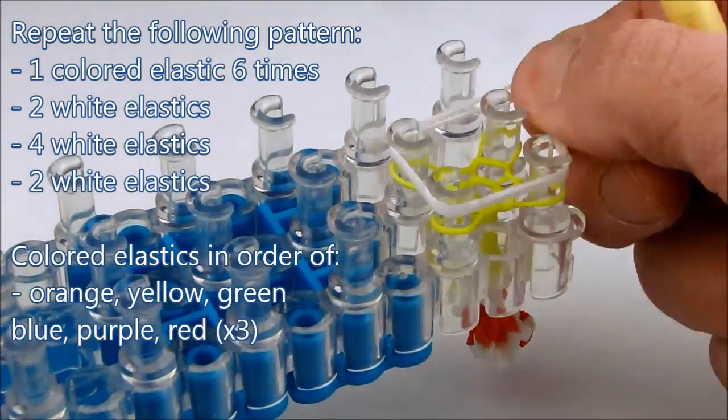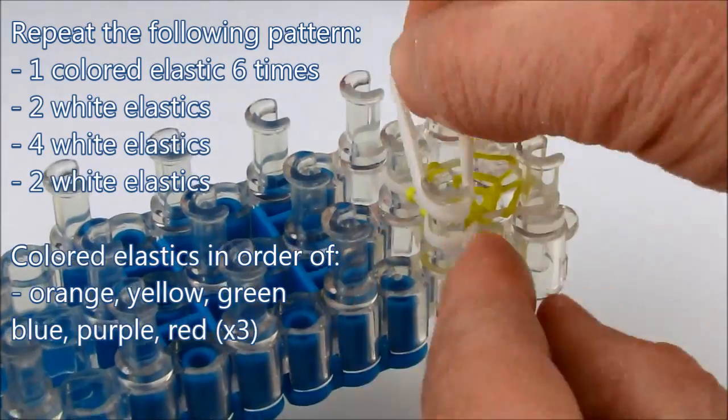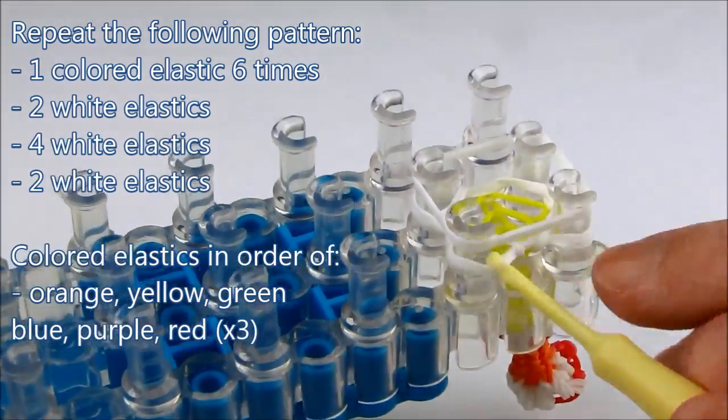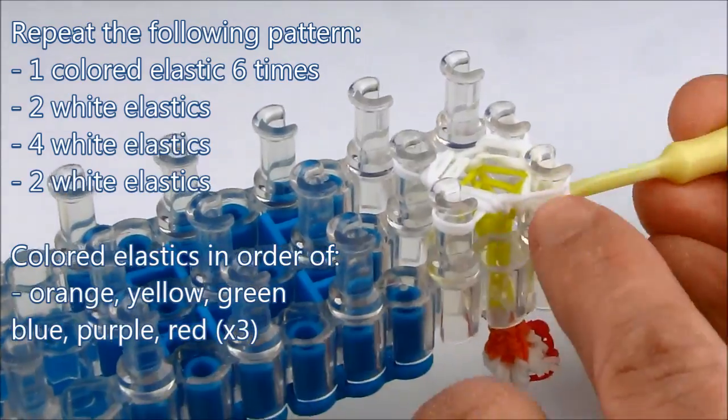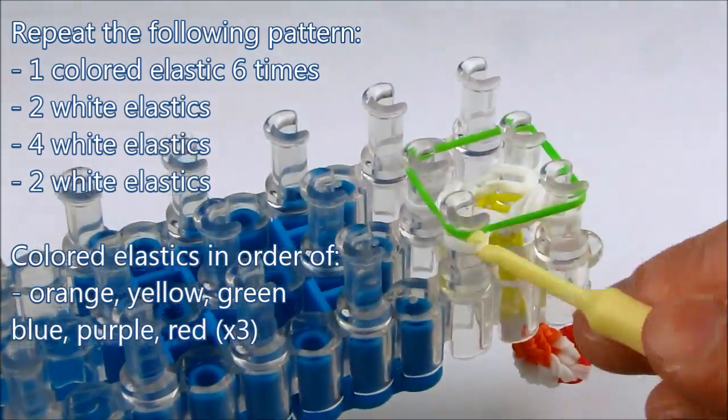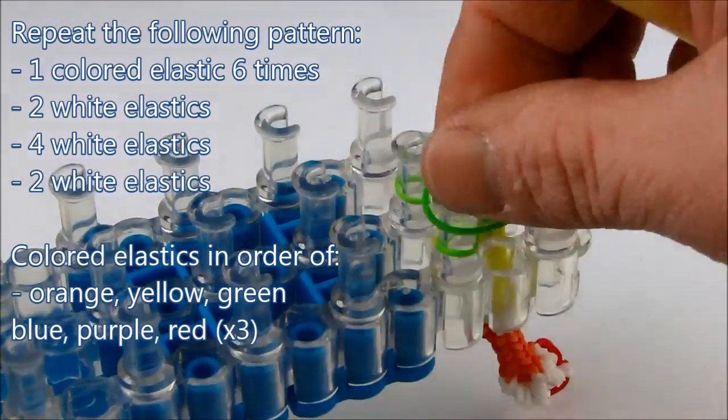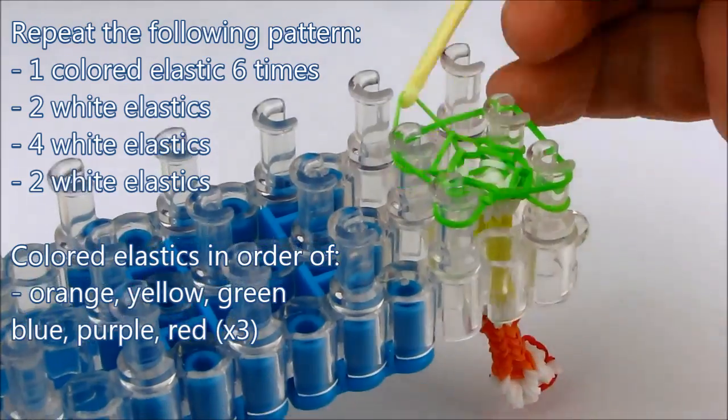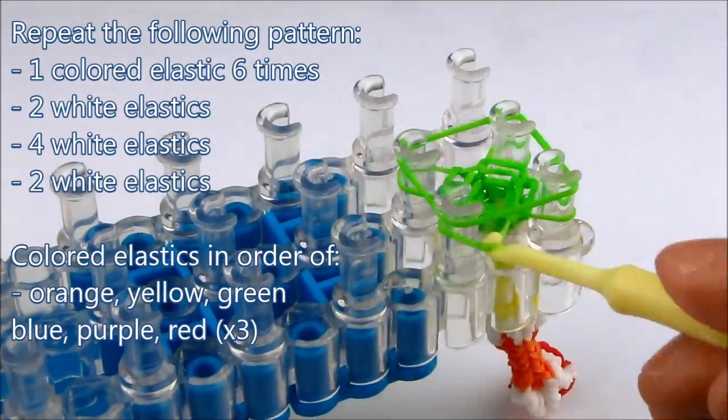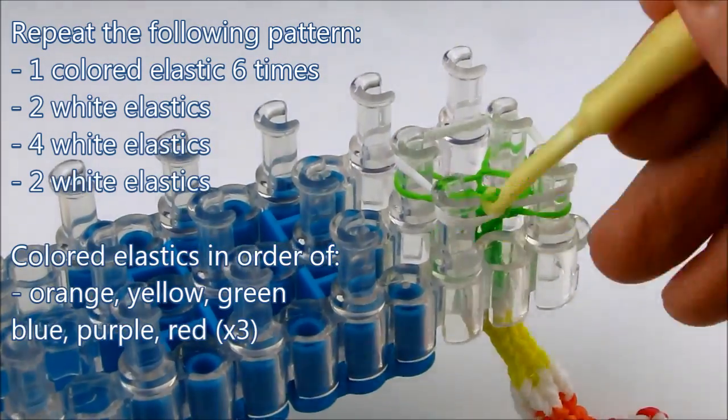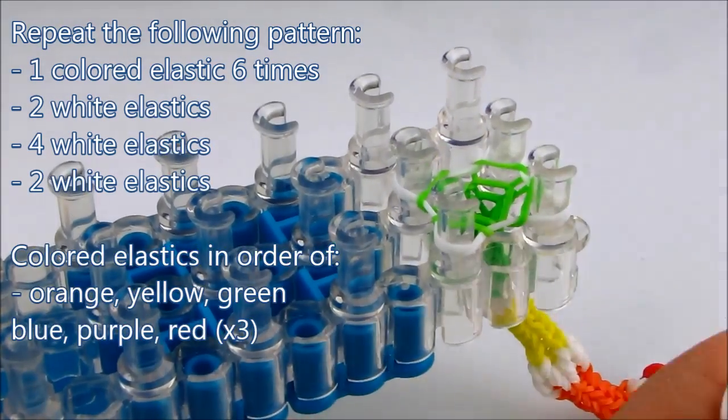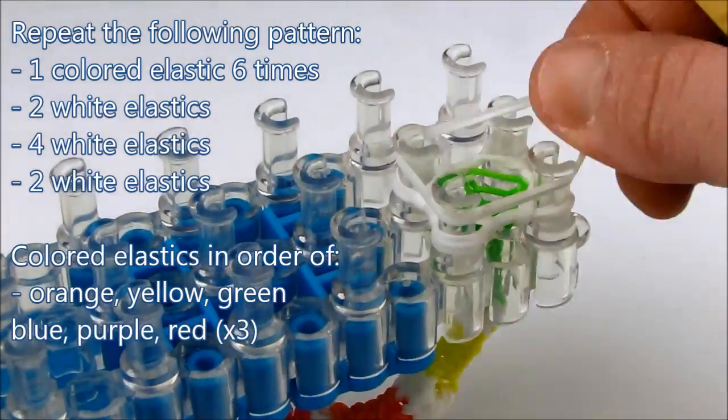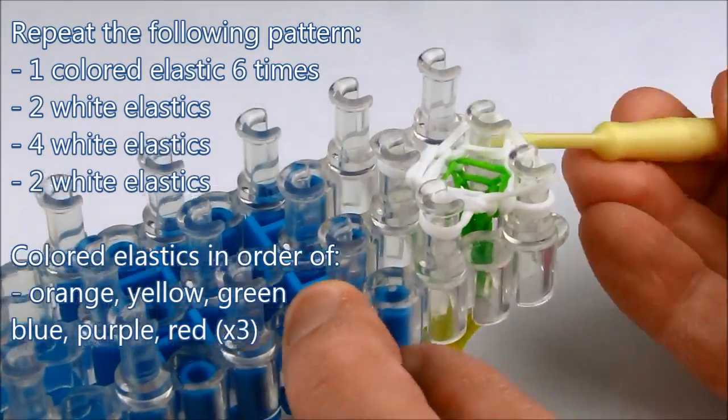We started off with three red elastics at the beginning of the pattern and we'll end up with three elastics at the end of the pattern. As we're looping it's going to get a little bit tight between the pegs so at some point we have to pull the pattern through, either by pushing through with your finger or pulling at the bottom with your loom tool.